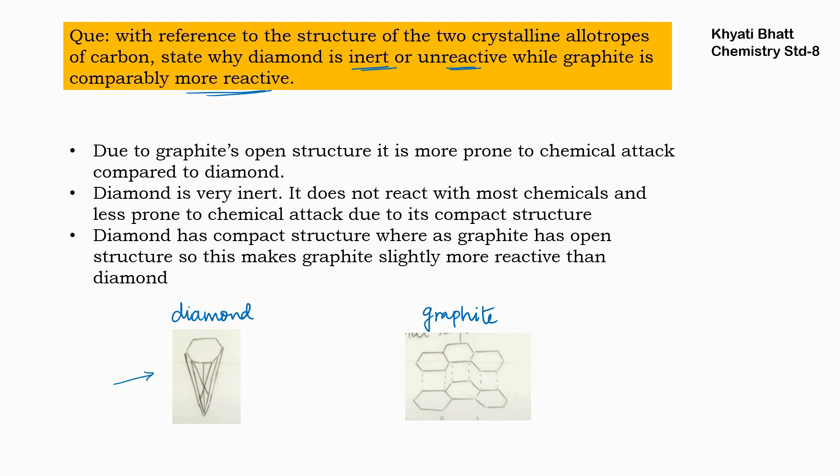In graphite, the molecular layers are held together with weak van der Waals forces. Due to graphite's open structure, it is more prone to chemical attack and will easily undergo chemical reaction because bonds can be easily broken. Diamond, however, is very inert — it will not undergo chemical attack because it has a compact structure, whereas graphite has an open structure with weak van der Waals forces.